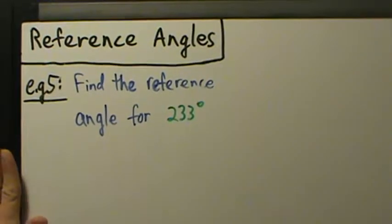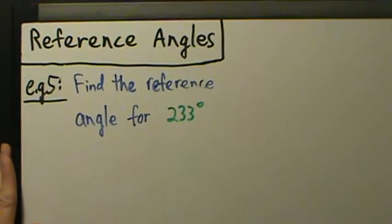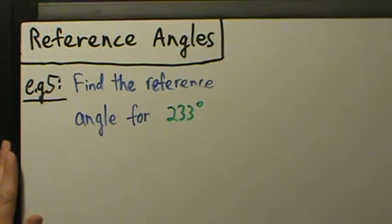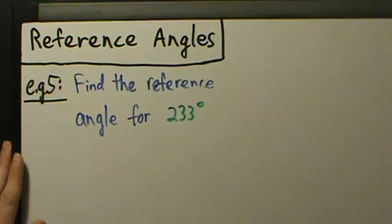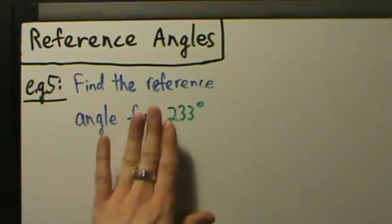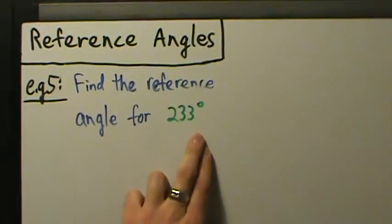In the previous video we did four simple examples with reference angles. Now we're going to start doing some more complicated ones. So example five: find the reference angle for 233 degrees.